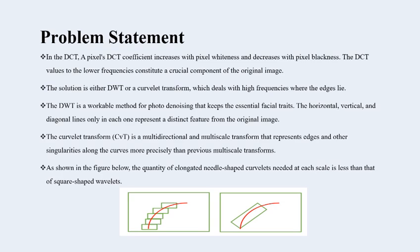The DCT-wavelet transform is a workable method for photo denoising that keeps the essential facial traits. The horizontal, vertical, and diagonal lines only represent a distant feature from the original image. The curvelet transform is a multi-direction and multi-scale transform that represents edges along the curve, more precisely than previous multi-scale transforms. The edge representation in curvelet and wavelet transform is displayed in the figure below. In the fine scale, a greater number of large coefficients can represent the wavelet edge on the left, and a small number can represent the wavelet edge on the right.